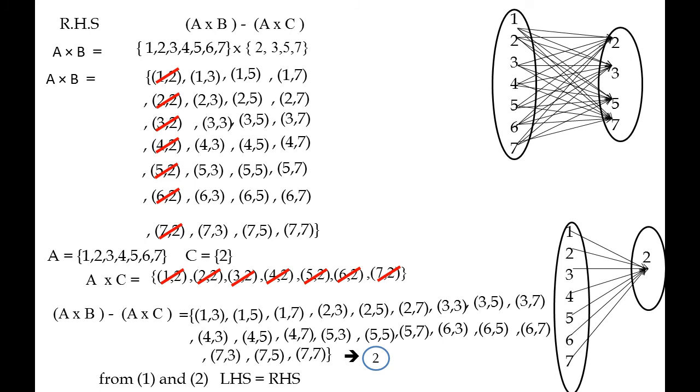Next A × C. A × C gives ordered pairs: (1,2), (2,2), (3,2), (4,2), (5,2), (6,2), (7,2). For (A × B) - (A × C), cancel common ordered pairs. The remaining ordered pairs from A × B match the left-hand side result.